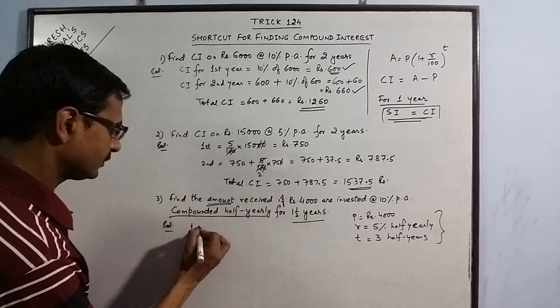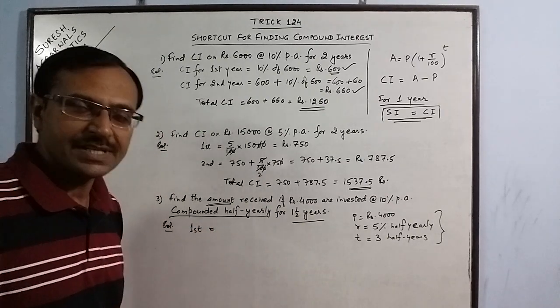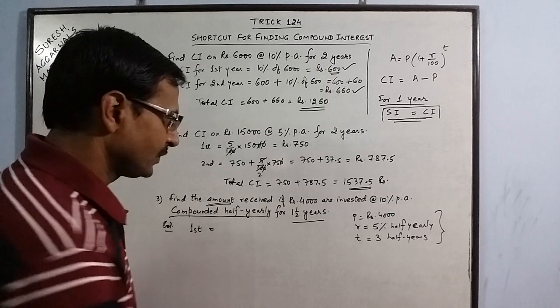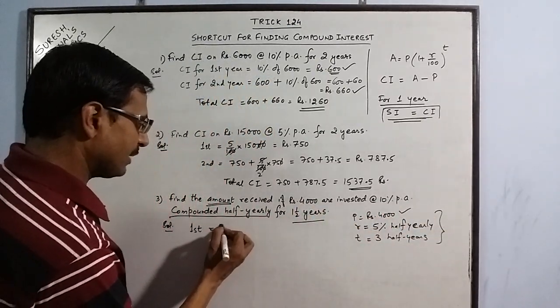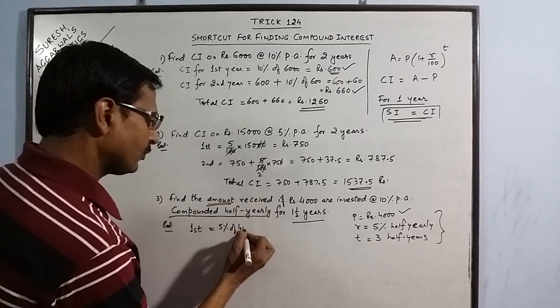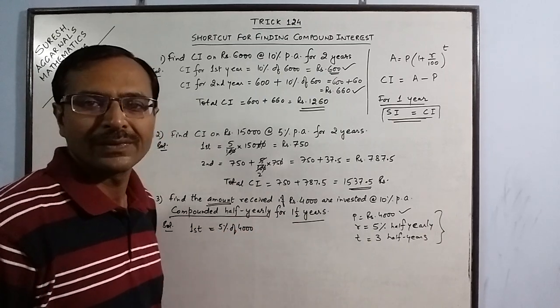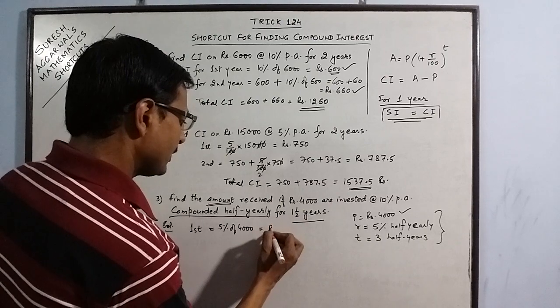CI for the first half year. This is 4000 and interest is 5%. 5% of 4000, this comes out to be Rs. 200.